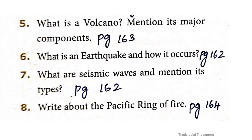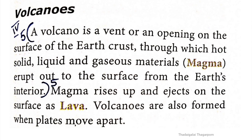Fifth question: What is a volcano? Mention its major components. The answer is given in page 163. A volcano is a vent or an opening on the surface of the earth's crust through which hot, solid, liquid and gaseous materials — that is magma — erupt out to the surface from the earth's interior.